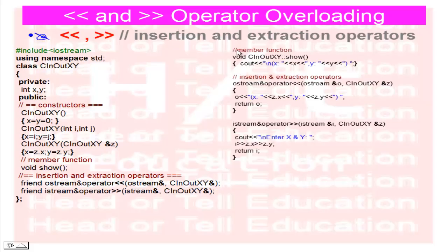First we write the body of member function show(). The return type is void, the class name is CInOutXY with the double colon scope resolution operator, and the function name is show(). Inside, we use cout to print a new line followed by the x and y values.